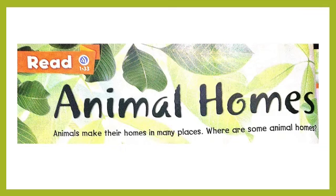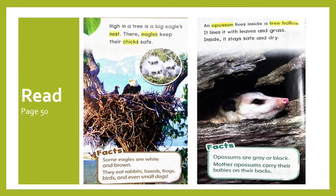Now take out page 50. We start reading the lesson: Animal Homes. Animals make their homes in many places. By reading this lesson, we will know where some animal homes are. High in a tree is a big eagle's nest — there, eagles keep their chicks safe. Facts: some eagles are white and brown; they eat rabbits, lizards, frogs, birds, and even small dogs. An opossum lives inside a tree hollow — it lines it with leaves and grass. Inside, it stays safe and dry.